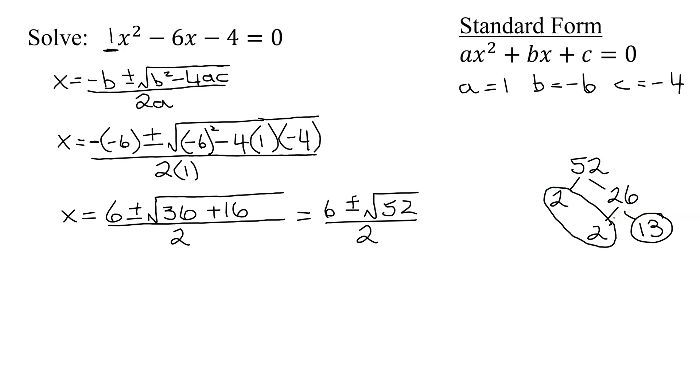And then I'm going to group these two together. So I'm going to have 2 times 2 is 4. 4 times 13 is 52. So I'm going to have x equals 6 plus or minus the square root of 4 times 13.